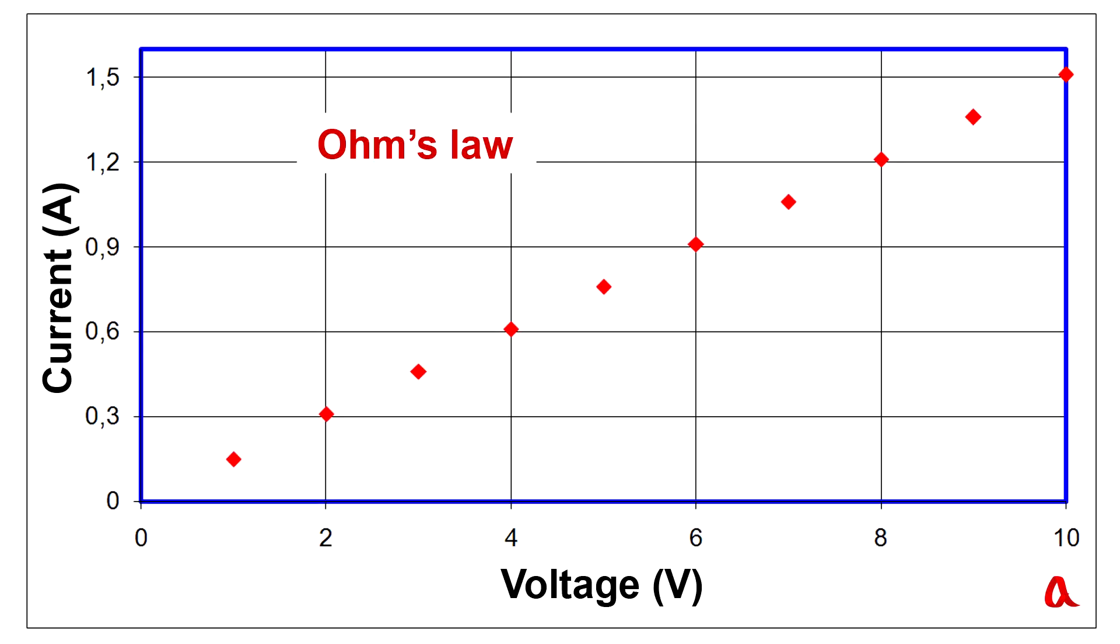Ohm's law in the strict sense is a direct proportional relationship between the current flowing through the conductor and the voltage applied to its ends.